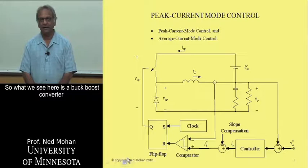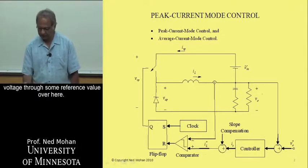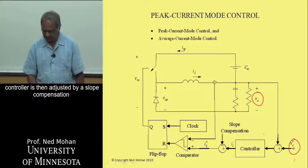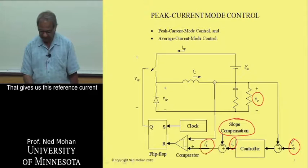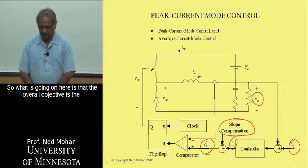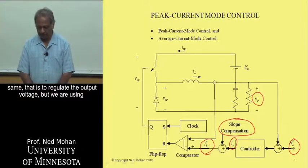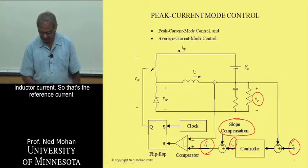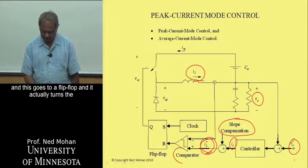What we see here is a buck-boost converter that is being controlled. We want to control the output voltage to some reference value. These two are compared in a controller, and the output of this controller is adjusted by slope compensation, giving us the reference current IL star. The overall objective is to regulate the output voltage, but we are using an inner state variable — the inductor current — which is compared with the actual measured current in a comparator, and this goes to a flip-flop that turns the switch off.